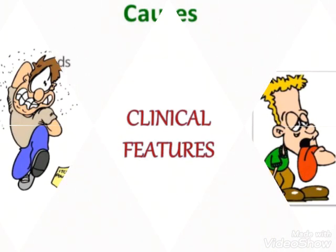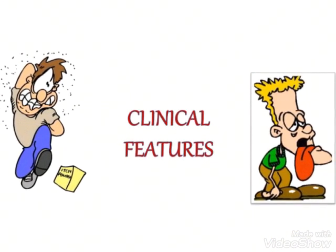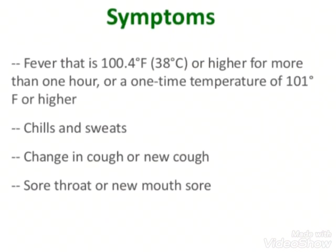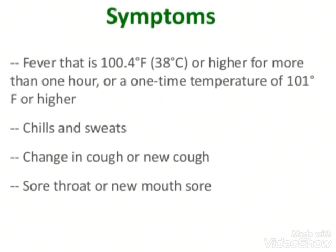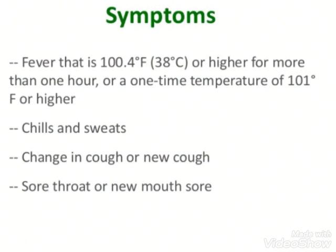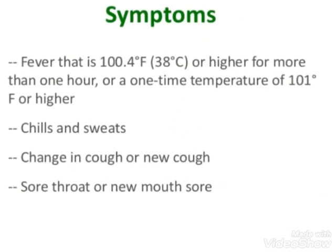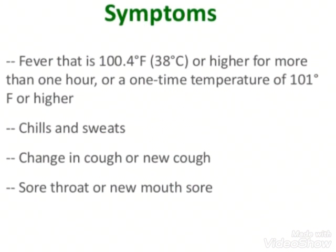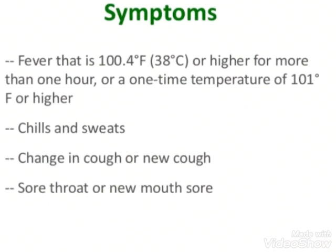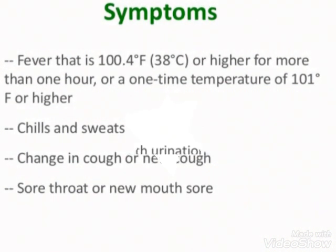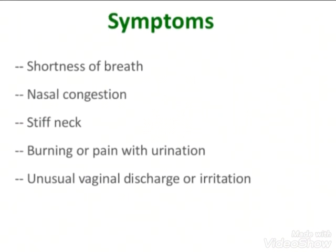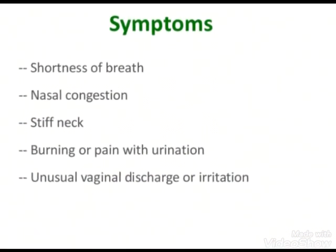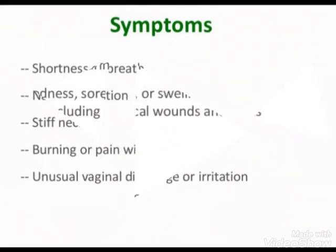Now we will see the clinical features — the signs and symptoms you are going to notice if a person has neutropenia. Fever of 100.4 degrees Fahrenheit or higher for more than one hour, or a one-time temperature of 101 degrees Fahrenheit or higher. Fever will be accompanied by chills and sweats. Then you can see a change in cough or new cough, sore throat or new mouth sores, shortness of breath, nasal congestion, stiff neck, burning or pain with urination, unusual vaginal discharge or irritation, and increased urination.